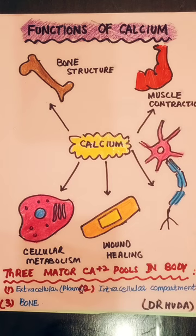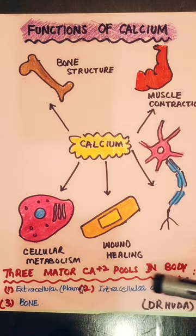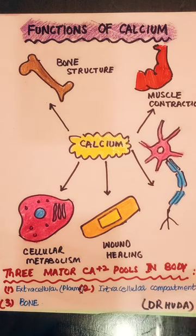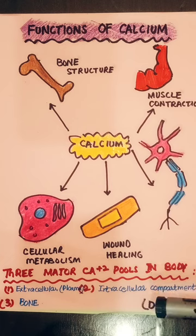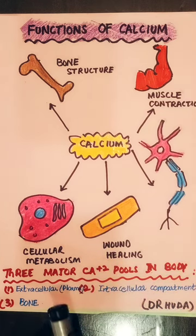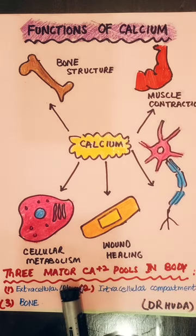The daily requirement of calcium is 1 gram per day, but for pregnant females the requirement is 1.5 grams per day. The three major pools are the extracellular compartment, intracellular compartment, and bone. The concentration of ionized calcium in extracellular fluid is 12,000 times the calcium concentration within the intracellular compartment.